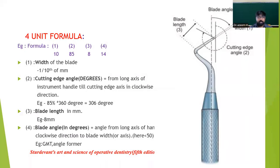In some instruments like the gingival marginal trimmer and angle former, there is an additional angle other than right angles to the cutting edge — called the primary cutting edge. In these instruments, an additional unit is added to make a four-unit formula. The first unit represents the width of the blade; the second unit represents the cutting edge angle (primary cutting edge angle), measured from the long axis of the instrument handle to the cutting edge in a clockwise direction; the third unit is the blade length in millimeters; and the fourth unit is the blade angle in degrees.